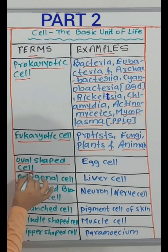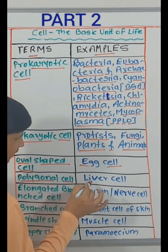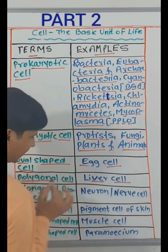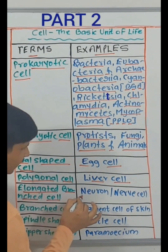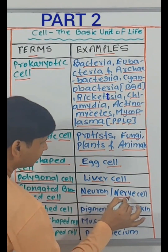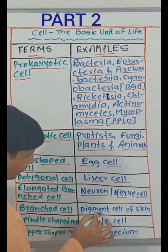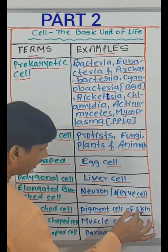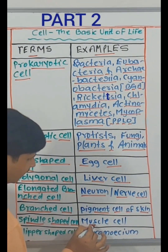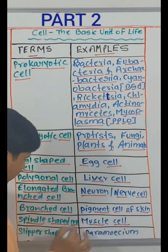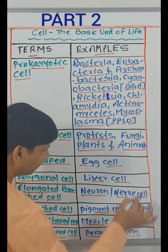Cell shapes and examples: oval-shaped cell — egg cell; polygonal cell — liver cell; elongated branched cell — neuron, that is nerve cell; branched cell — pigment cell of skin; spindle-shaped cell — muscle cell; slipper-shaped cell — Paramecium.